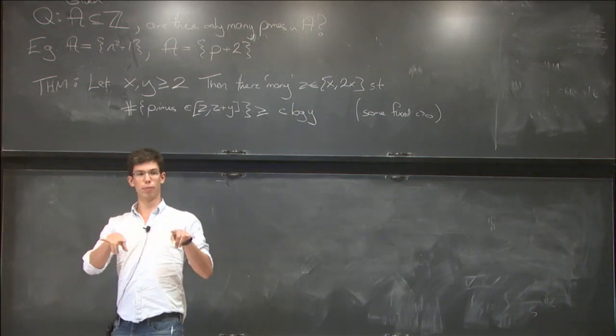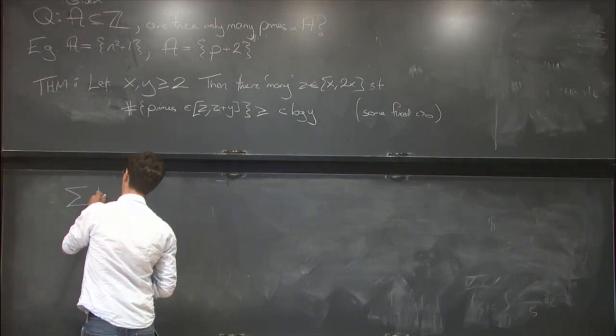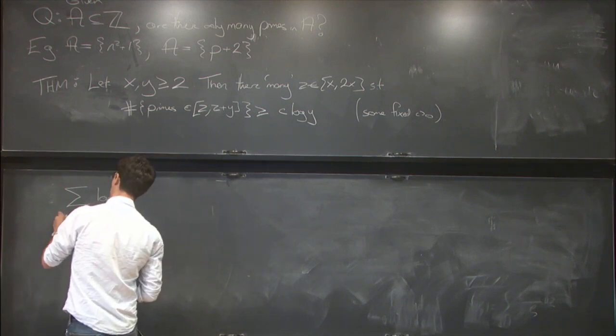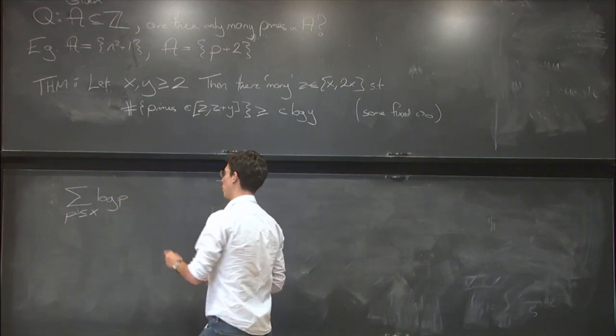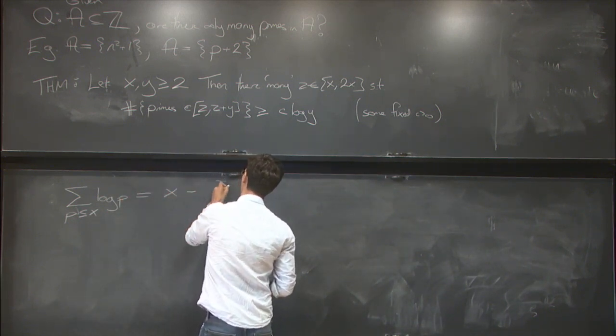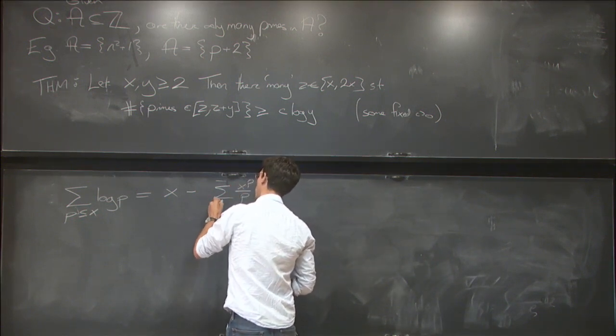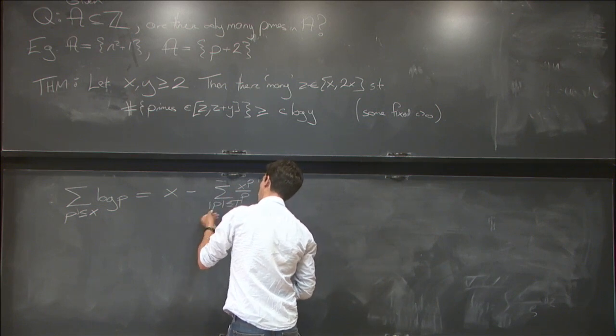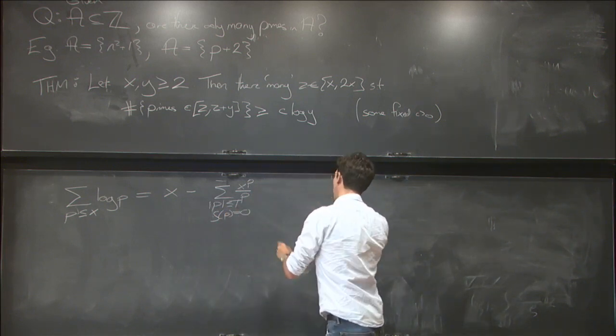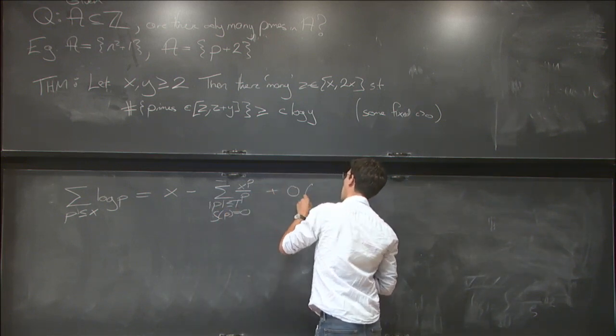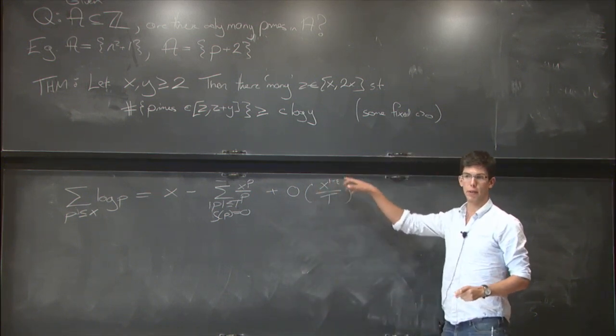So maybe the easiest way to see the connection between primes and the Riemann zeta function is the explicit formula. So if I'm looking at prime powers p to the j up to some large number x and I'm summing them with weight log p, then I can write this as x minus the sum of x to the rho over rho for all zeros rho up to some parameter t of the Riemann zeta function, plus some error term which is pretty small provided you take t reasonably big in terms of x.